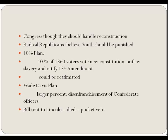Lincoln proposed a very easy plan to bring the rebellious states back into the Union with malice toward none. If 10% of the voters as of 1860 voted in a new constitution outlawing slavery and ratified the 13th Amendment, they could be readmitted to the Union—thus, the 10% plan.